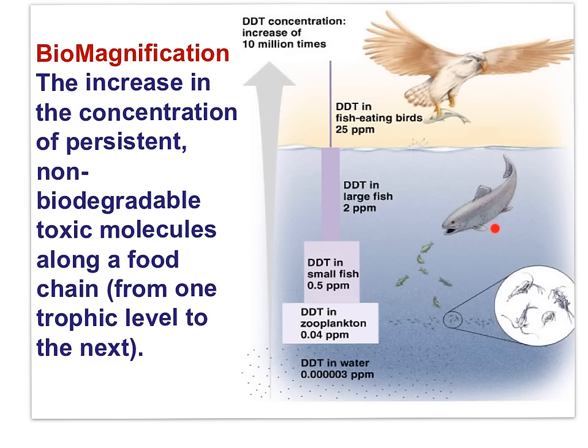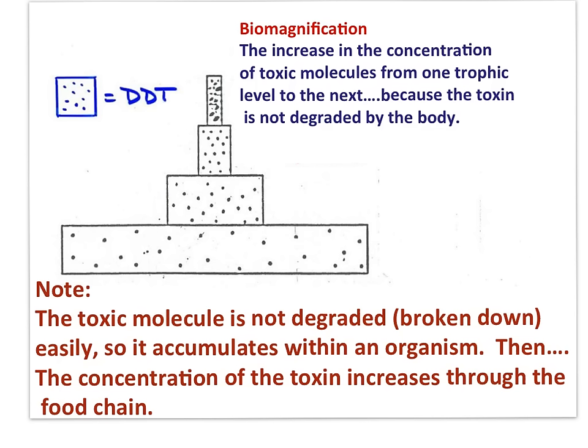Fish eat many zooplankton and predatory birds eat many fish, so concentrations magnify up the chain. The most important concept in understanding biomagnification is that the toxin — whether DDT, mercury, PCBs, or other — is not degraded or excreted by the body. Thus, the toxin is stored and accumulates in the body of individual organisms, and then increases in concentration up the food chain. The concentration of the toxin is magnified at the highest trophic levels. As a result, the adverse effects of toxins are often seen first at the top of the food chain.